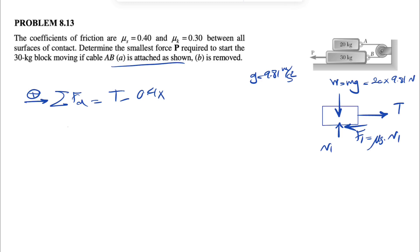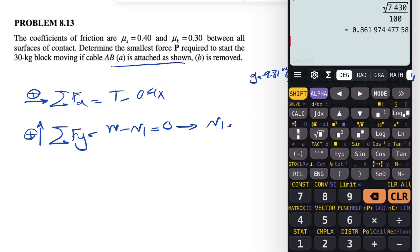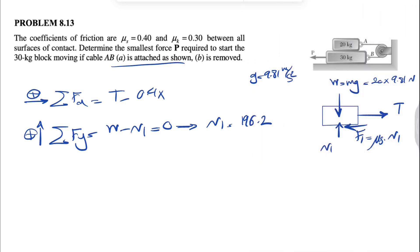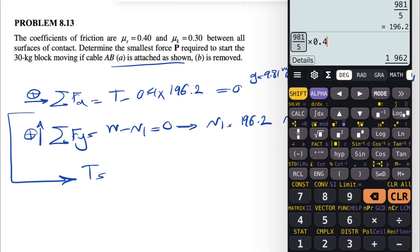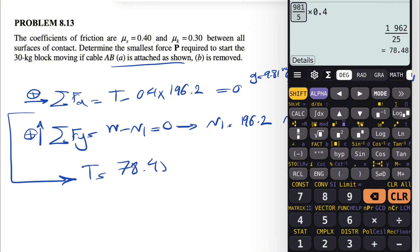To find N1, we do sum of forces in Y: W minus N1 = 0, so N1 = 20 × 9.81 = 196.2 N. Going back to the X equation, friction = μs × N1 = 0.4 × 196.2. So the tension T = 196.2 × 0.4 = 78.48 N.